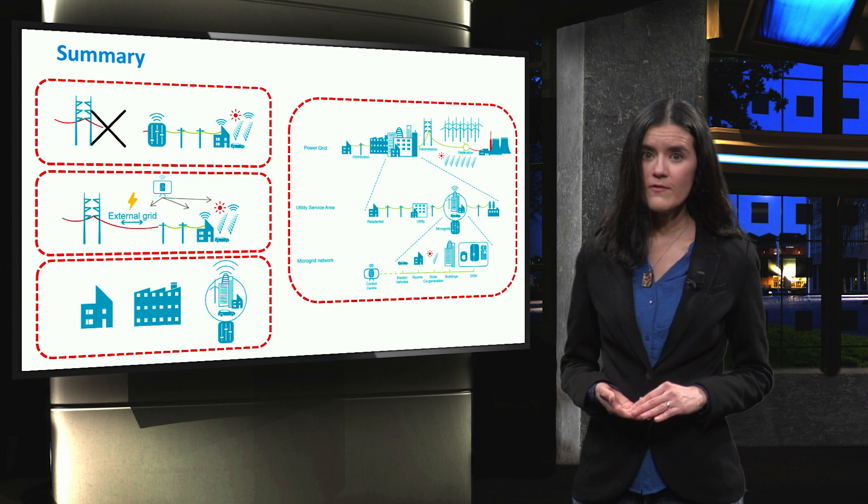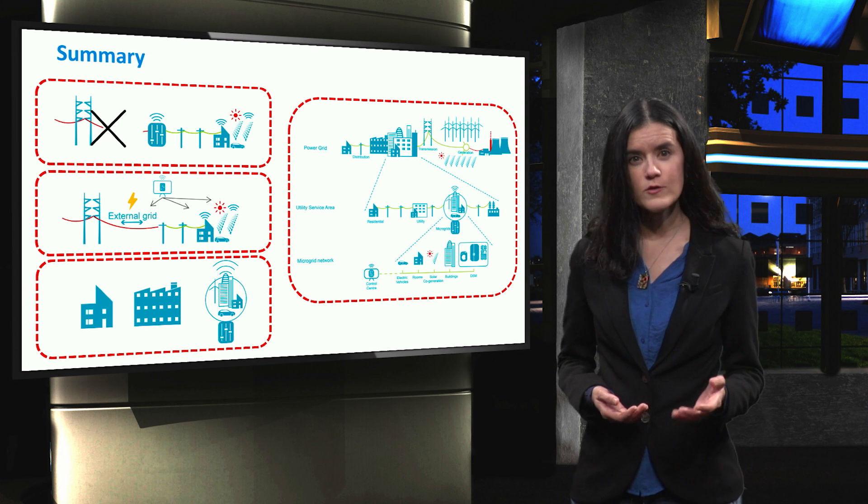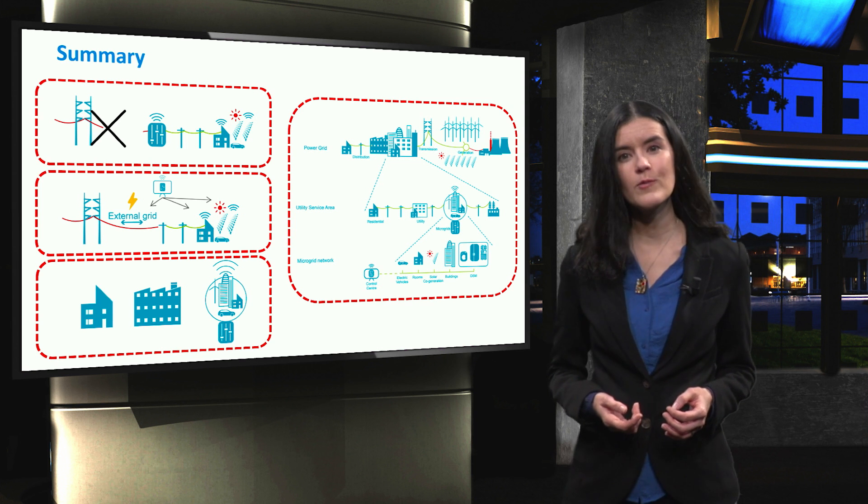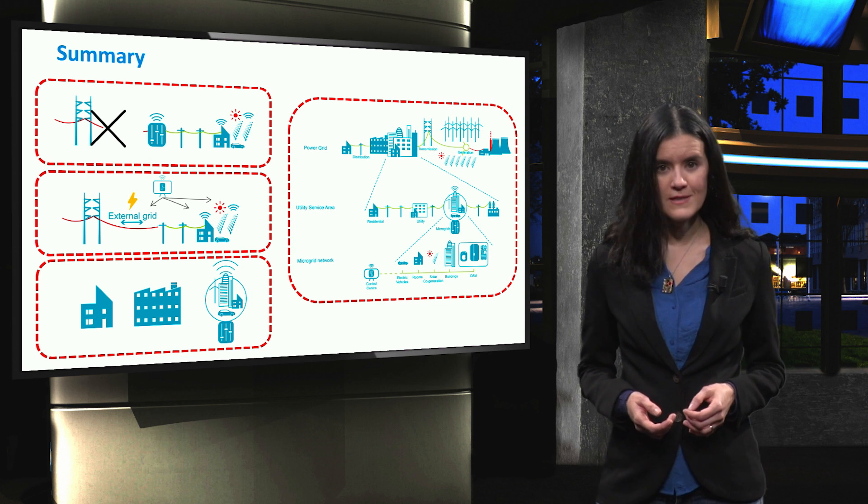Among these benefits we find higher resiliency, efficiency and modularity. Also, due to the higher participation of renewable energy sources, microgrids can be more environmentally friendly than passive distribution systems.